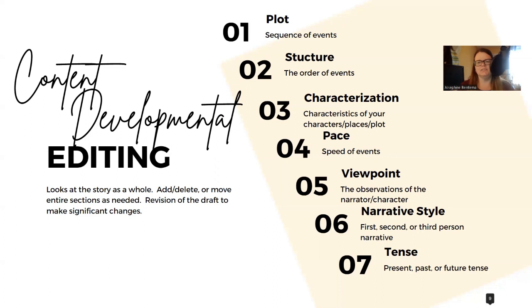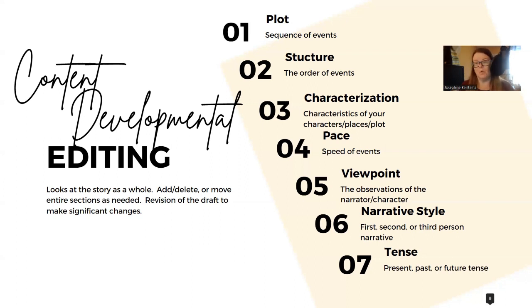Then there's characterization — the characteristics of your characters, places, and plot. If a character is a tough bully and then suddenly starts crying, there better be some serious trauma and background story. Your characters, places, and plots have to stay true throughout the story, or there has to be a significant reason why.